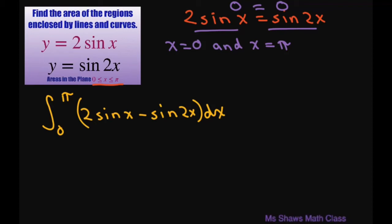So this is going to be, for this one, that's going to be negative 2 cosine x. This one's going to be plus 1 half cosine 2x. And we're evaluating from 0 to pi.